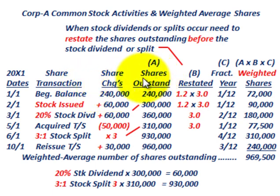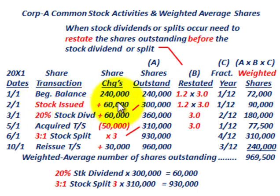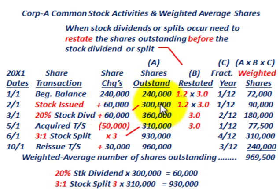Let's go through our basic example and determine the shares outstanding based on share transactions. On January 1st, our beginning balance is 240,000 shares outstanding. Then on February 1st, stock is issued — 60,000 shares of common stock — so we add 60,000 to the 240,000 and now have 300,000 shares outstanding.